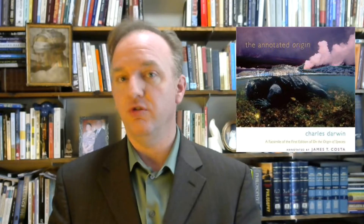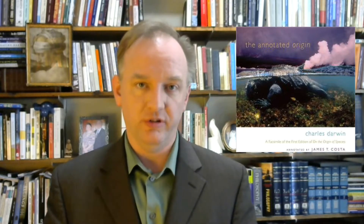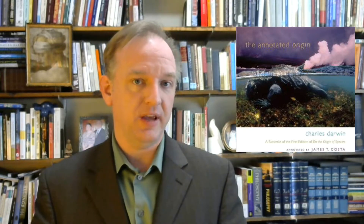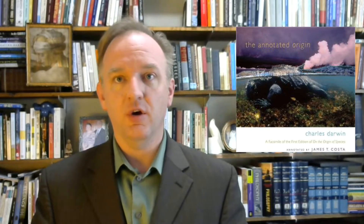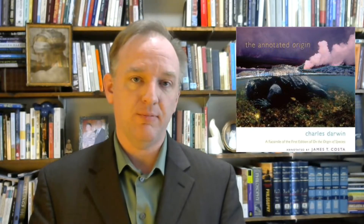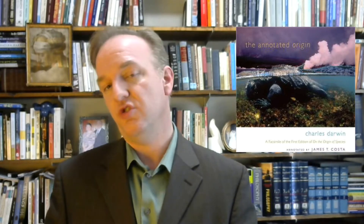Chapter 4 of Darwin's On the Origin of Species is a crucial chapter outlining his views on natural selection, but it's also 51 pages long. In this video, I will give a breakdown of the eight different sections of this chapter and say a few words about what you should focus on in reading each section.